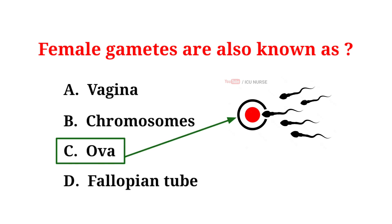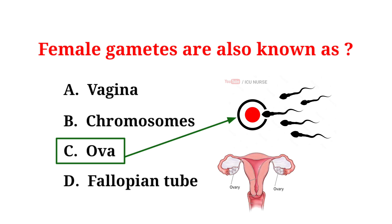Female gametes are also called ova or egg cells. Ova are produced in the female ovaries. During fertilization, sperm from males fertilize the egg to form an embryo. Ovulation is when an egg is released from the ovary for possible fertilization. Understanding these basic concepts is fundamental in learning about human reproduction.